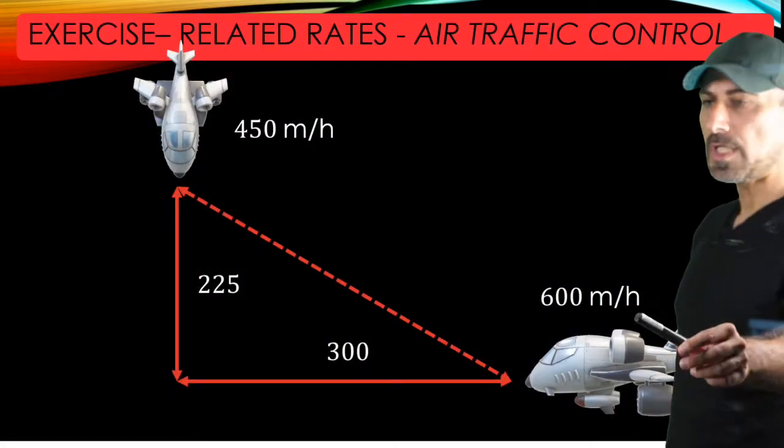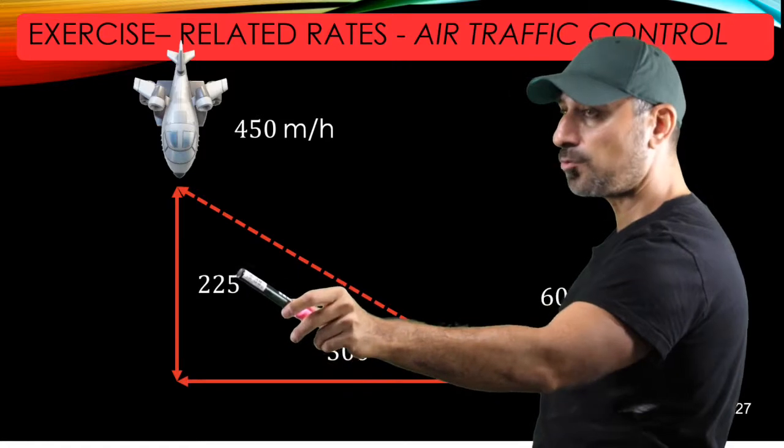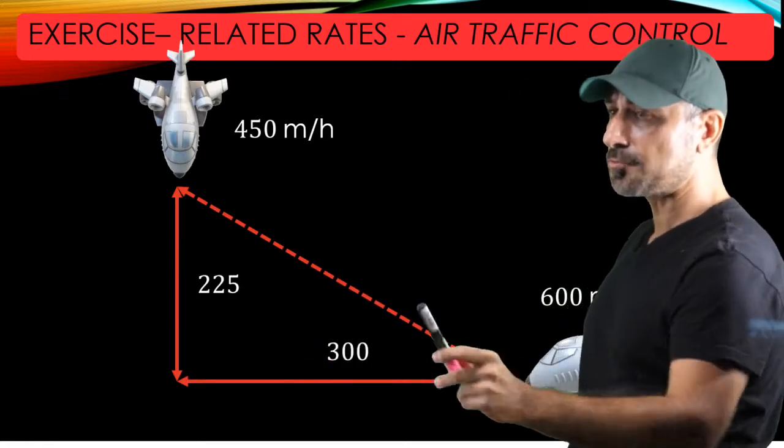As you see, one plane goes all the way to west. This guy is far from the point of impact 225 miles and the other one is 300 miles.